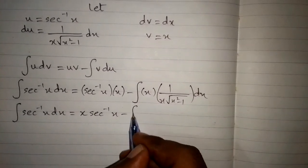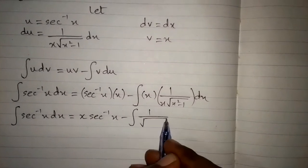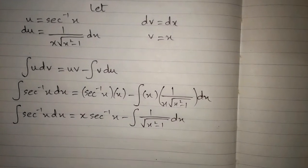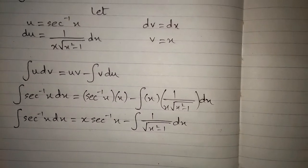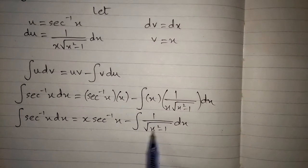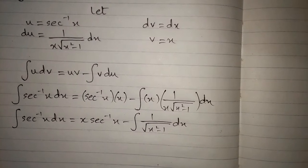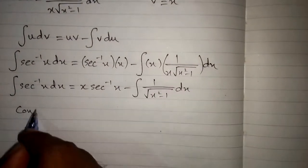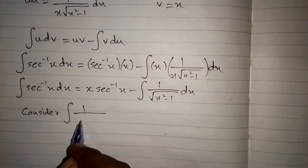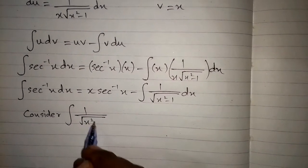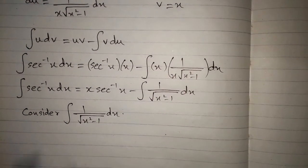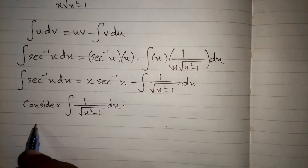Now we have to find the integral of 1 upon square root of x squared minus 1, dx. In order to integrate this function we will use trigonometric substitution.